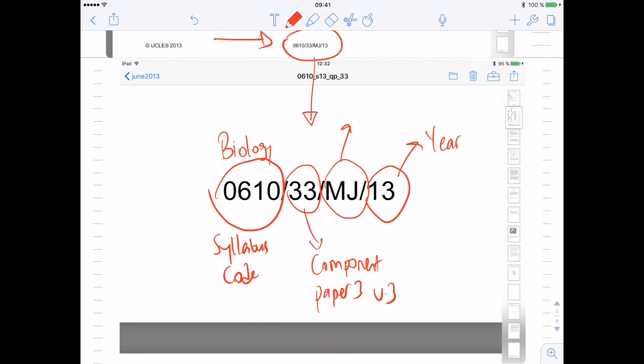So instead of writing S for summer, MJ stands for May, June, the summer sessions. By the code written at the bottom part of each page in the question booklet, you can easily find the correct marking scheme that you can study with. Can we change the IGCSE science subjects syllabus components?